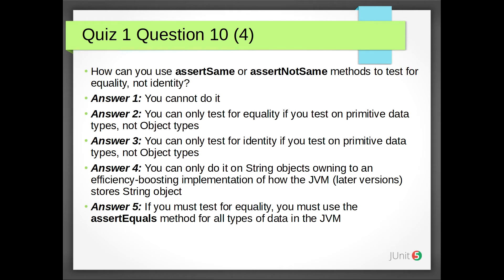Question 10: How can you use assertSame or assertNotSame methods to test for equality, not identity? Answer 1: You cannot do it. Answer 2: You can only test for equality if you test on primitive data types, not object types. Answer 3: You can only test for identity if you test on primitive data types, not object types. Answer 4: You can only do it on String objects owing to an efficiency-boosting implementation of how the Java Virtual Machine stores String objects. Answer 5: If you must test for equality, you must use the assertEquals method for all types of data in the JVM. The correct answer is 4: you can only do it on String objects owing to an efficiency-boosting implementation of how the JVM stores String objects in later versions.